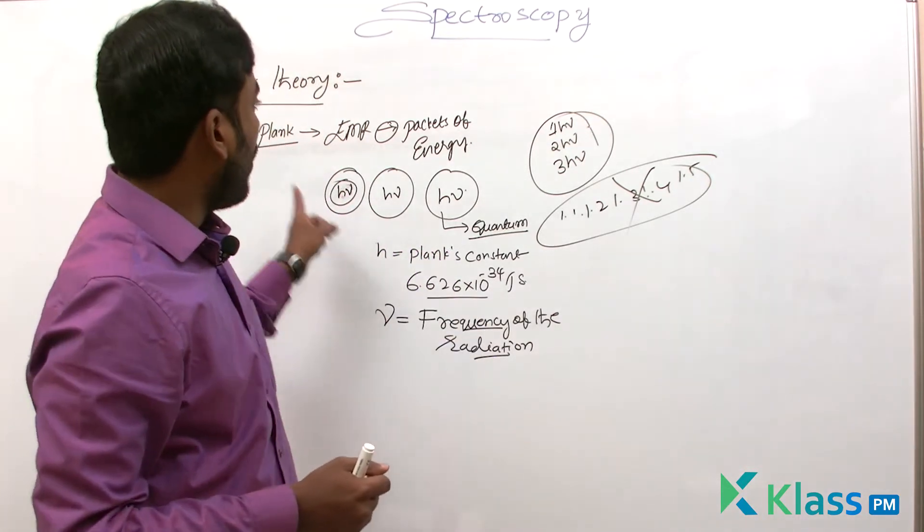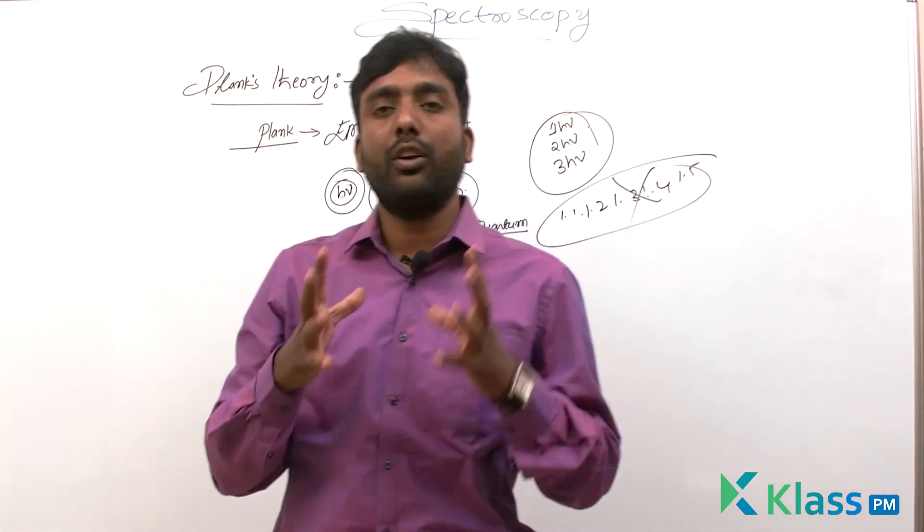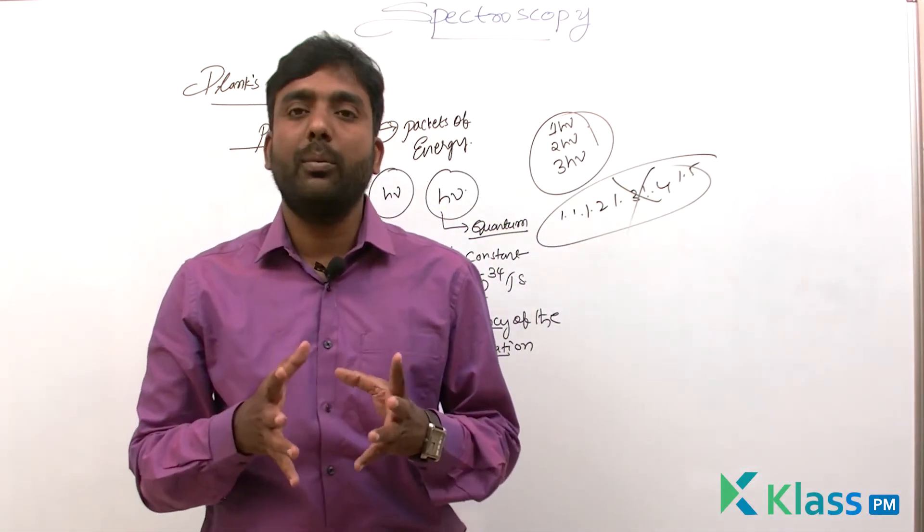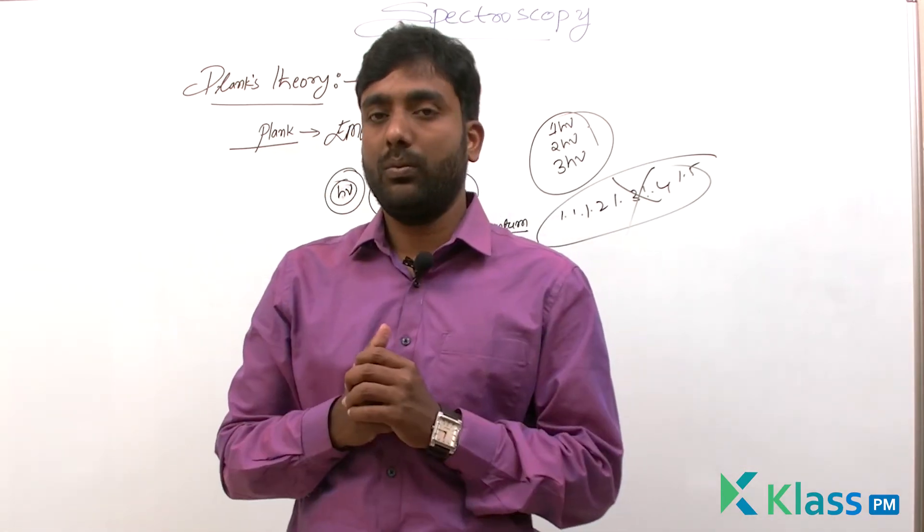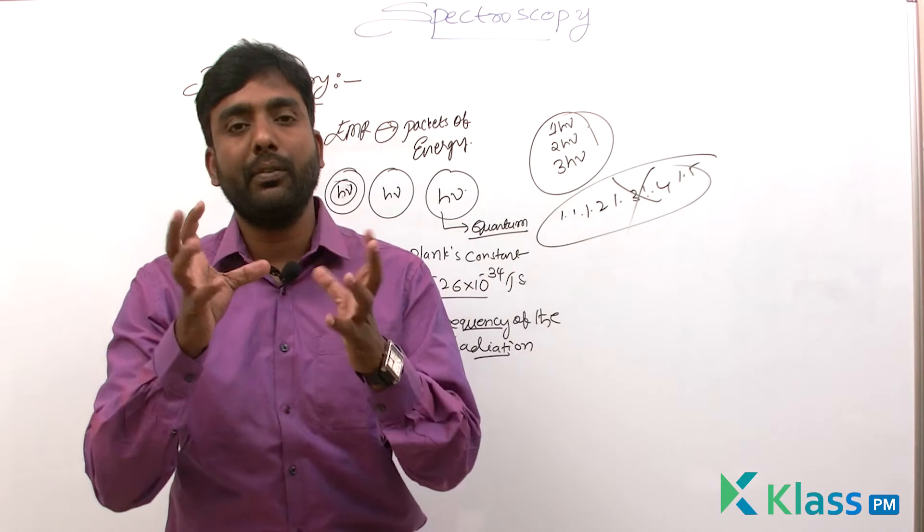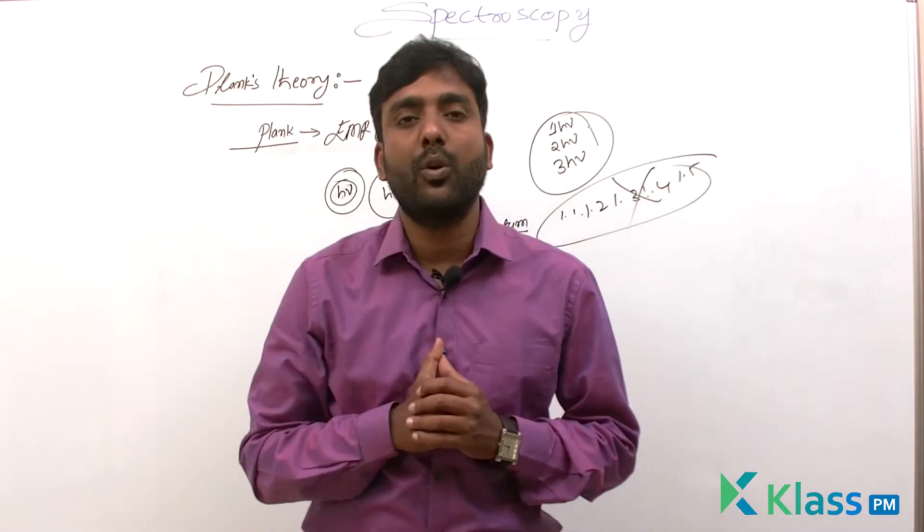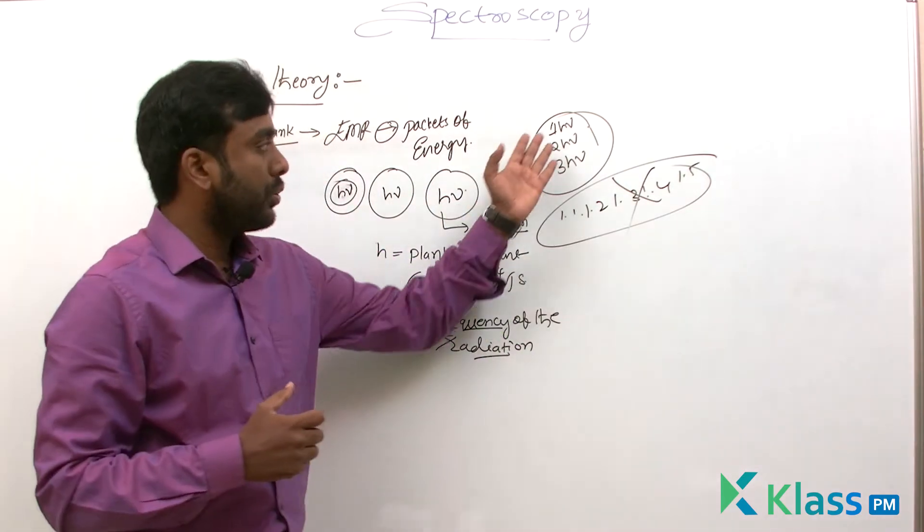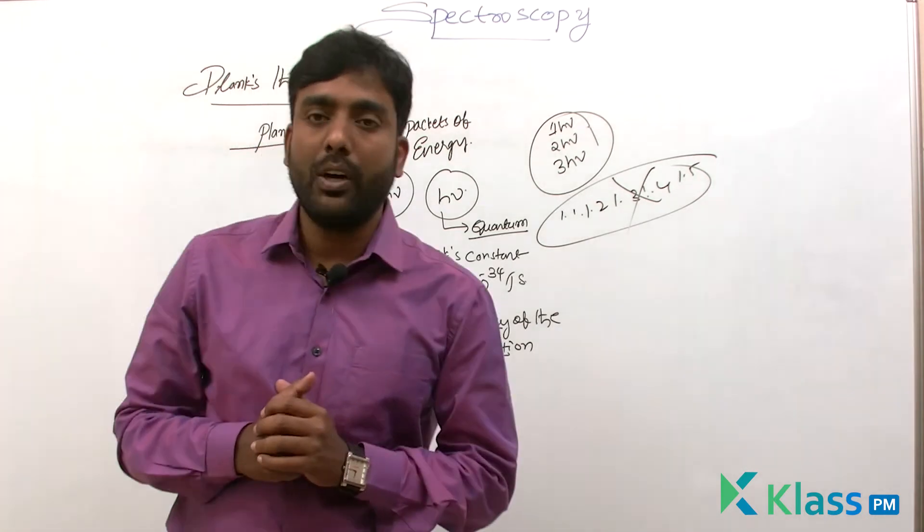So that is called Planck's quantum theory. It says that electromagnetic radiation's energy is also quantized. Quantized means any quantity which has a fixed value. Any quantity that has a fixed value, we call it quantized. So here the energy of electromagnetic radiation is quantized. They have fixed values like this. So this is Planck's quantum theory.